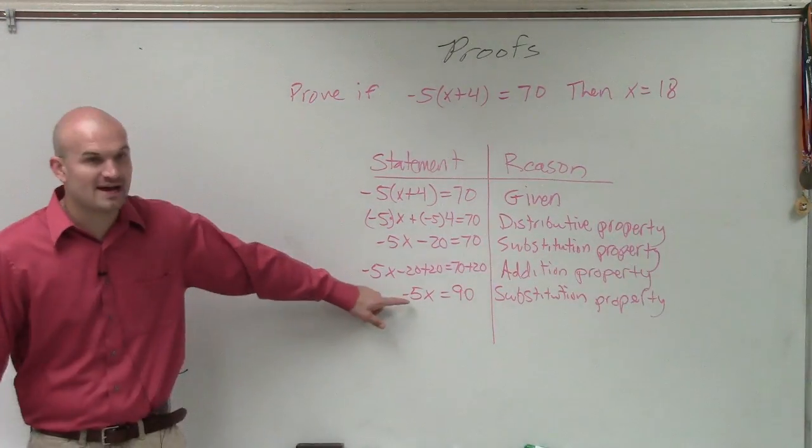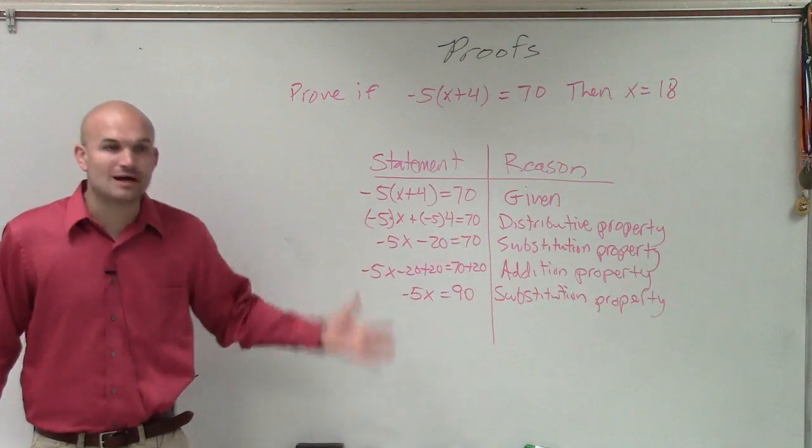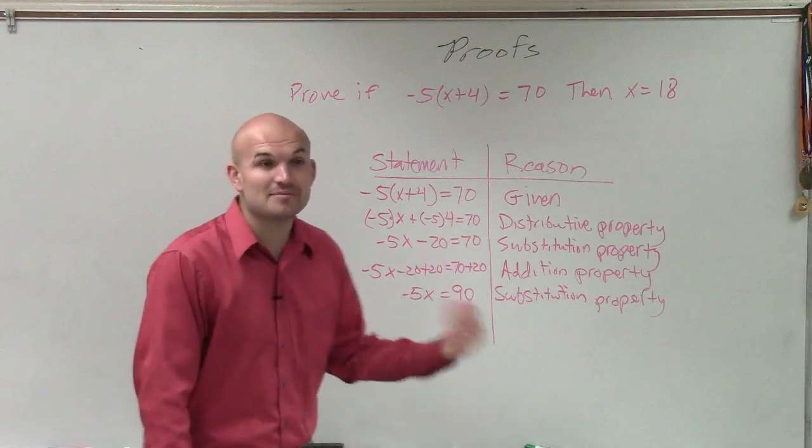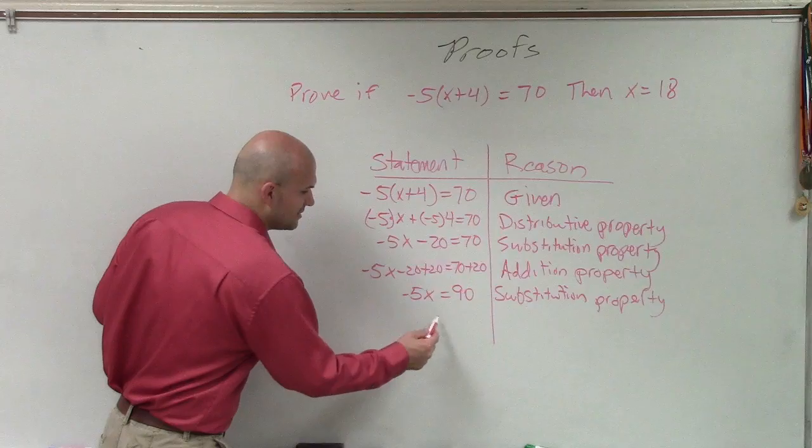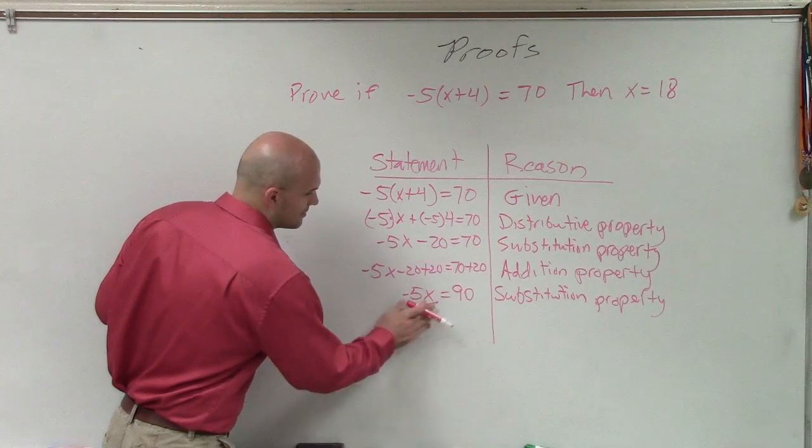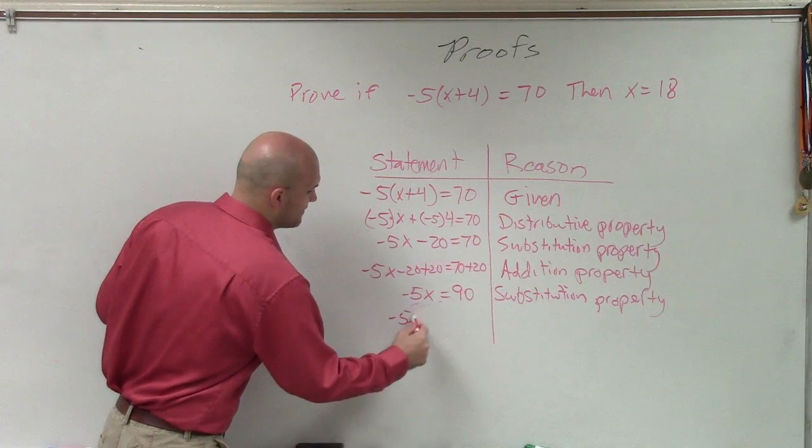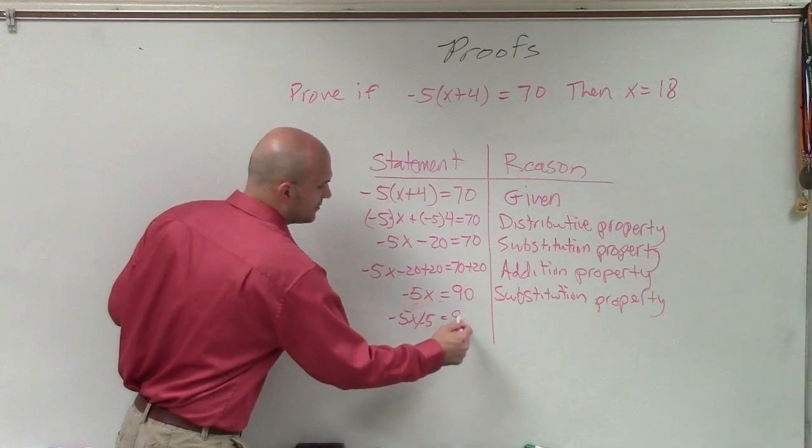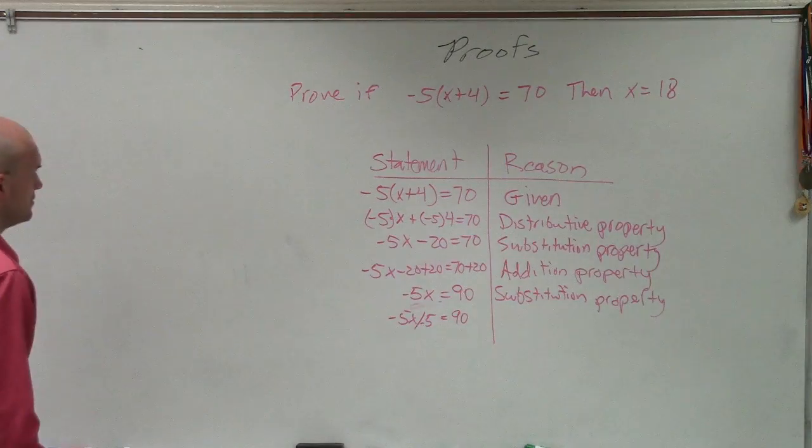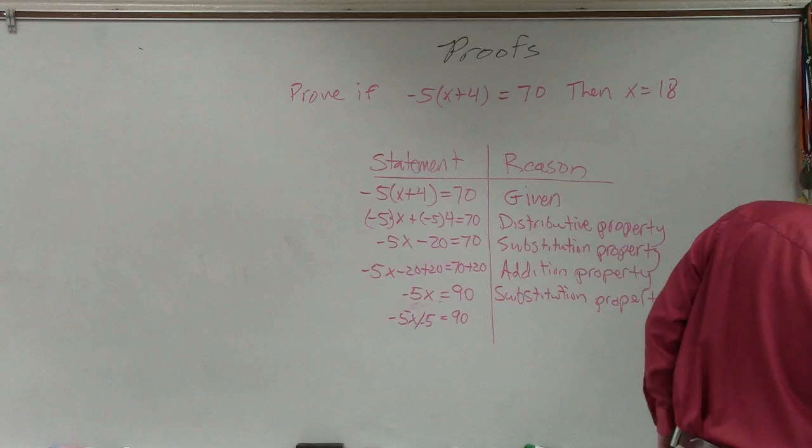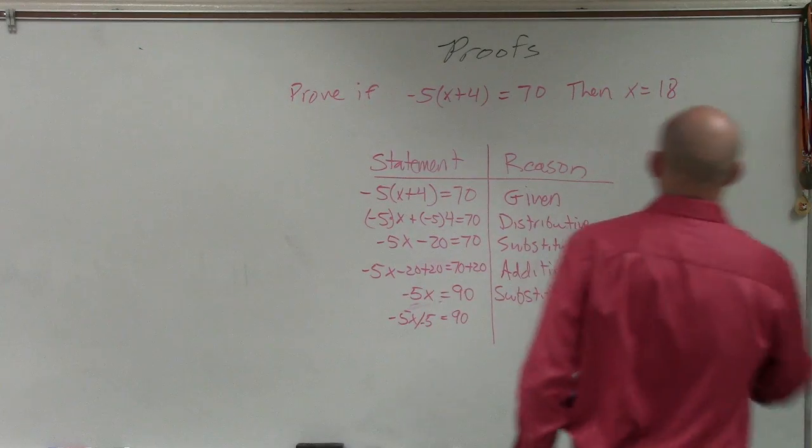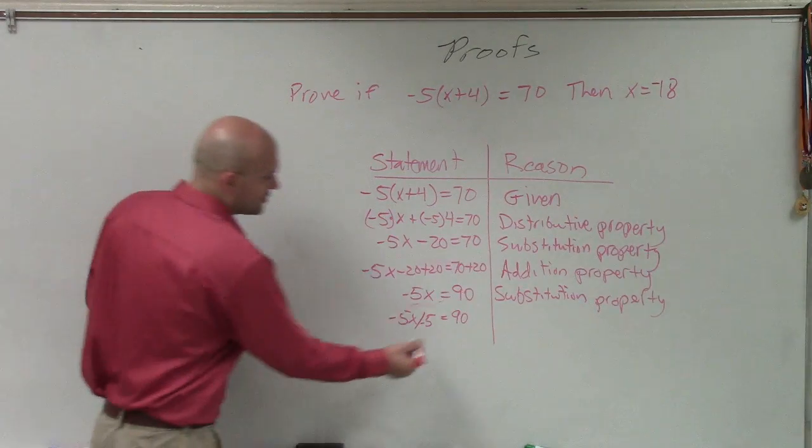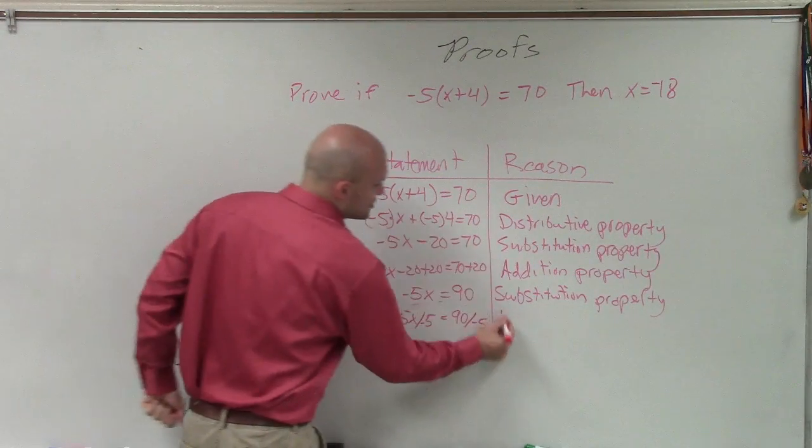Then I'll go to my last one. Sam, if I have negative 5x equals 90, the next mathematical operation I'd have to do is divide, right? And I have to make sure I divide on both sides. So negative 5x divided by a negative 5, equals 90. Oh, x equals negative 18. I didn't write down negative 18. So you're going to want to divide by a negative 5, which is your division property.